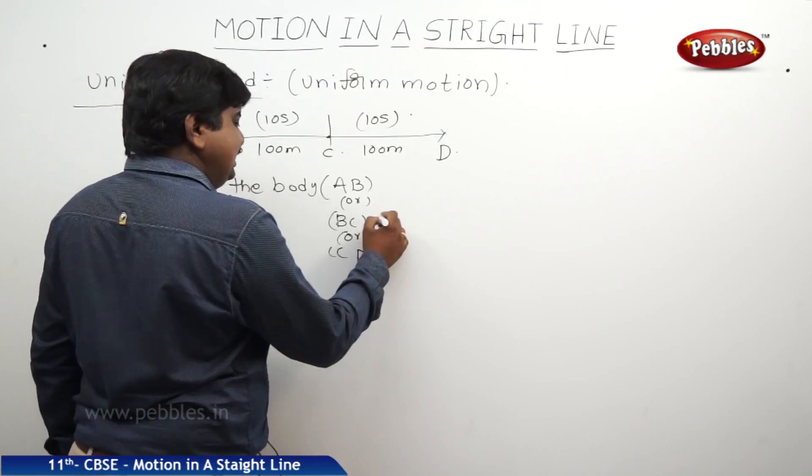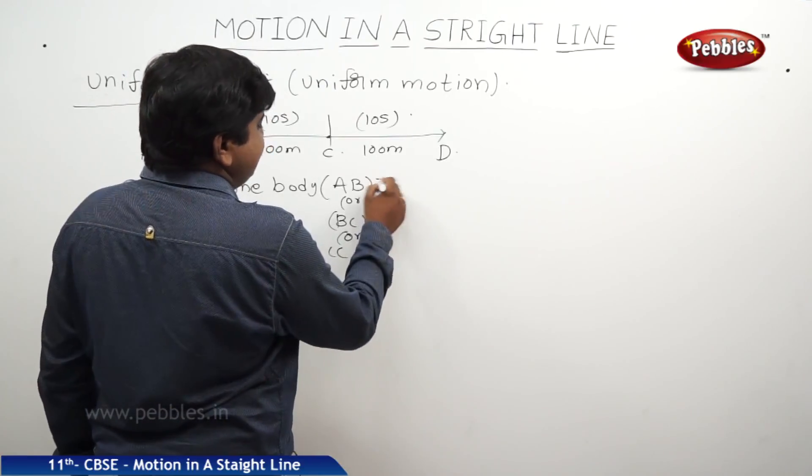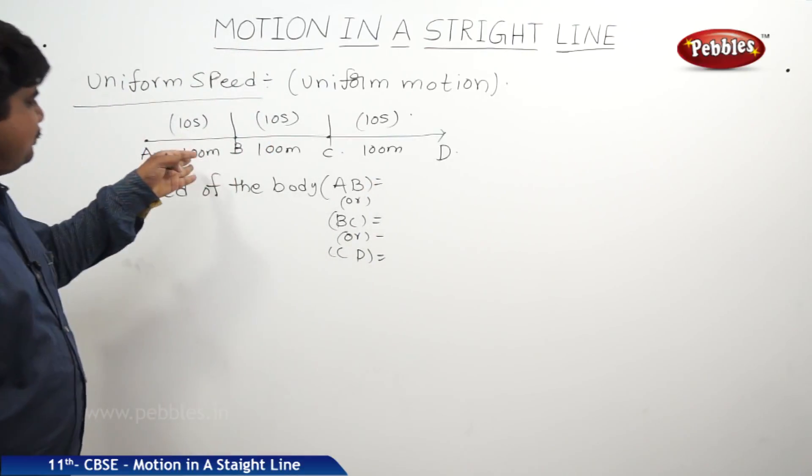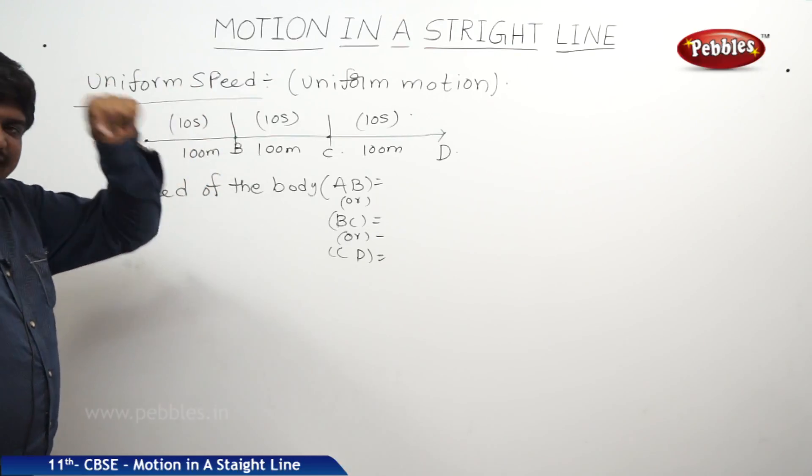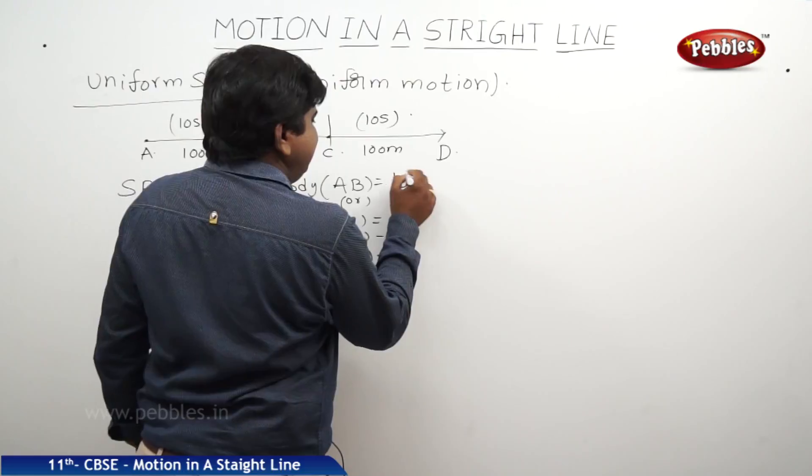Means if you want to find out the speed of the body between A to B or B to C or C to D, if you take any time, any interval or any interval positions, speed equals distance by time. Distance is 100 meters, time is 10 seconds. So, anyway we will get 10 meters per second.